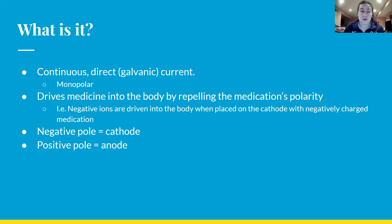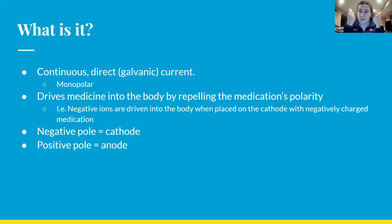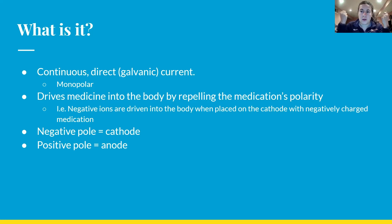The other one is a dispersive electrode. The one that's pushing the medication into the skin is the active electrode. It drives medication into the body by repelling the medication's polarity. For example, negative ions will repel — like two ends of a magnet that are the same side will repel. Same thing with electricity: two negative electrons together will repel each other, and two positives will repel each other as well. Likes repel, opposites attract.